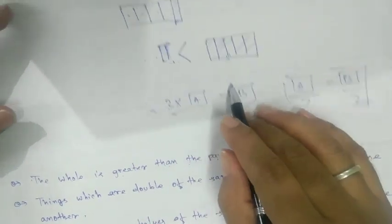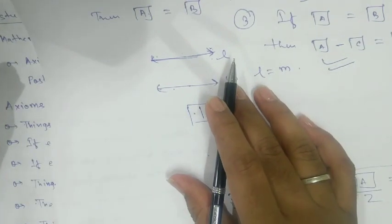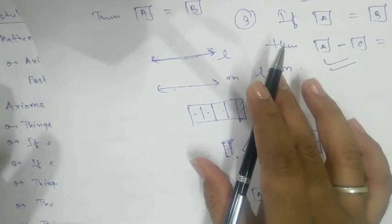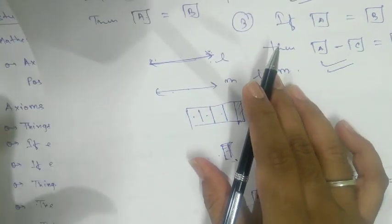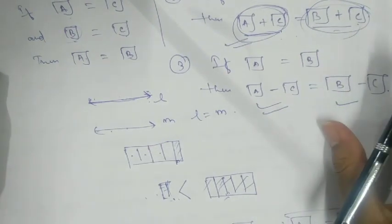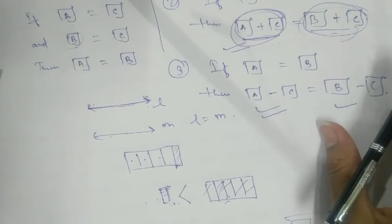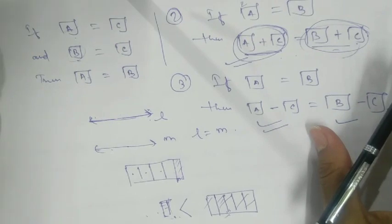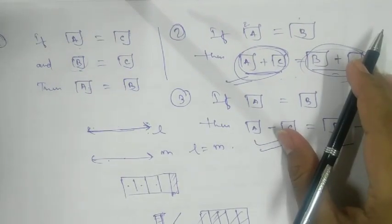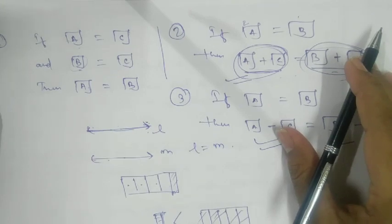So these are the seven axioms — seven pillars of algebra, you can say. We are using these to prove everything we have discussed in junior classes and will discuss in class 9, 10, and higher classes. In the next class, we are going to discuss the five postulates. Thank you.